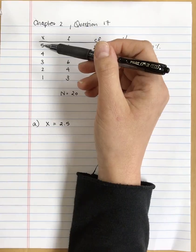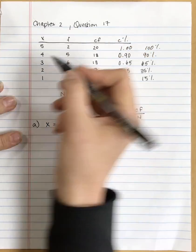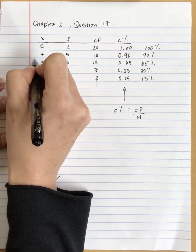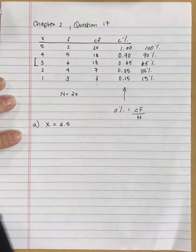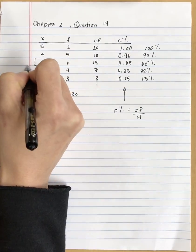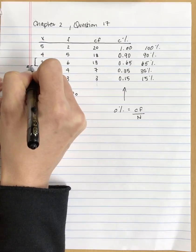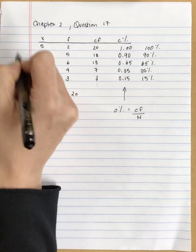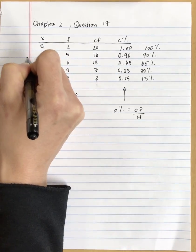really each of these is corresponding to real limits. So this category, for example, here goes from the lower real limit of 2.5 to the upper real limit of 3.5.